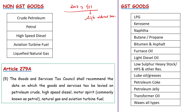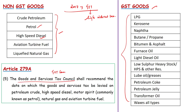As of now, there are five petroleum products for which GST is not imposed — petrol and diesel are among them, while some other petroleum-related products are taxed under the GST regime. If GST is ever to be levied on these five products, it shall be recommended by the Goods and Services Tax Council as mentioned in Article 279A of the Indian Constitution.